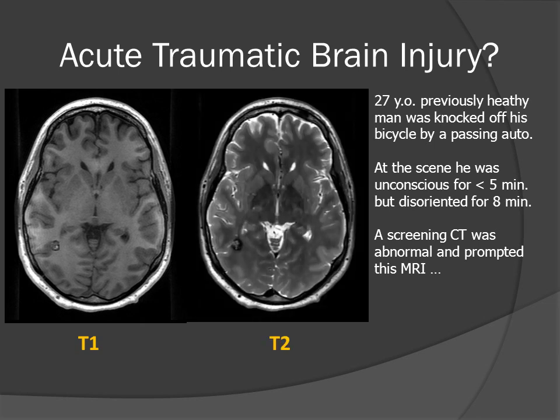On the T1 and the T2-weighted images, we see a heterogeneous lesion, both black and white at the same time, without any apparent mass effect. This is suspicious for a cerebral cavernous malformation and not the sequela of acute head trauma.